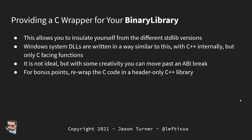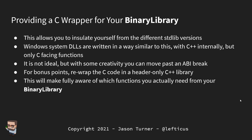For bonus points, you can rewrap the C code in a header-only C++ library — header-only so you never have to worry about ABI; it just compiles to whatever it needs to look like on the next compiler upgrade. This also makes you fully aware of which functions you actually need from your binary library. You might find there are only five functions to re-implement, letting you get a clean break from the past.